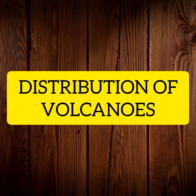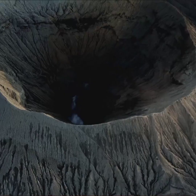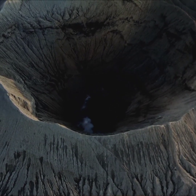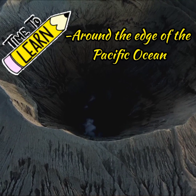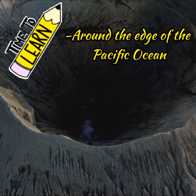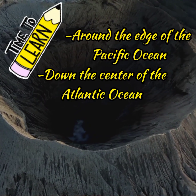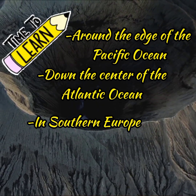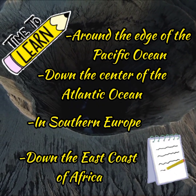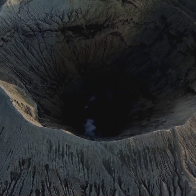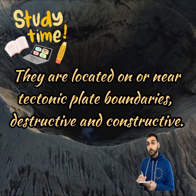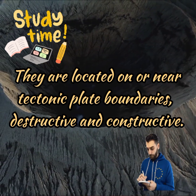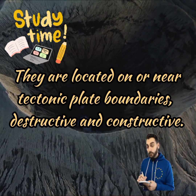Distribution of Volcanoes: The Earth's active volcanoes are located in specific areas, including around the edge of the Pacific Ocean, down the center of the Atlantic Ocean, in Southern Europe, and down the East Coast of Africa. The reason for this distribution is that they are located on or near tectonic plate boundaries, specifically destructive and constructive boundaries.